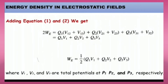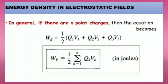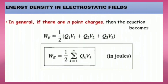This equation can be written as We = ½(q1·V1 + q2·V2 + q3·V3), where V1, V2, and V3 are the total potentials at the respective charge positions. Therefore, the general formula is We = ½ · Σ(k=1 to n) qk·Vk, in joules.